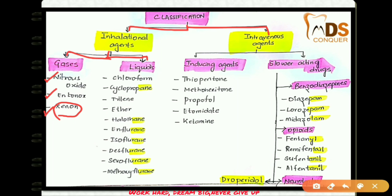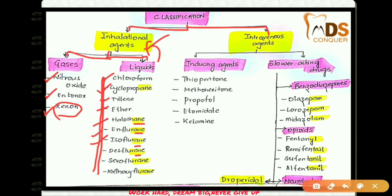For the liquid inhalational agents, there are many examples and you can remember them easily because most end with '-ane': chloroform, cyclopropane, trilene, ether, halothane, enflurane, isoflurane, desflurane, sevoflurane, and methoxyflurane. These are all examples of liquid inhalational agents.